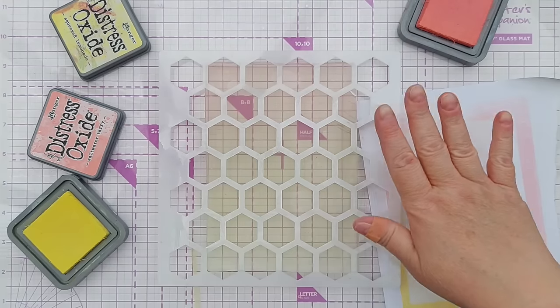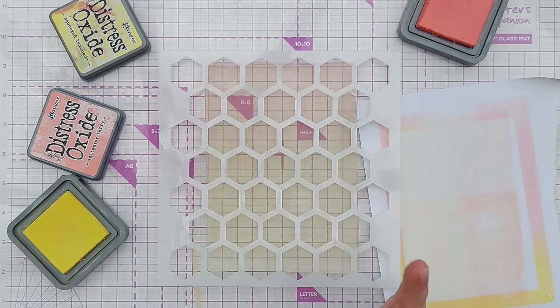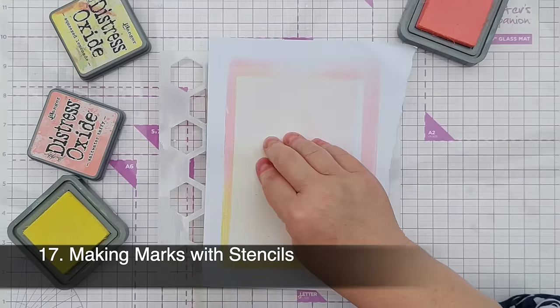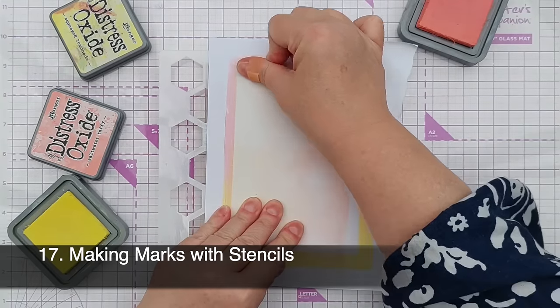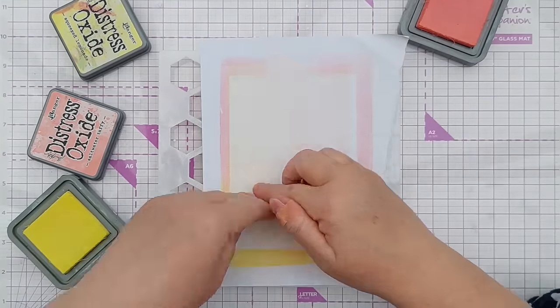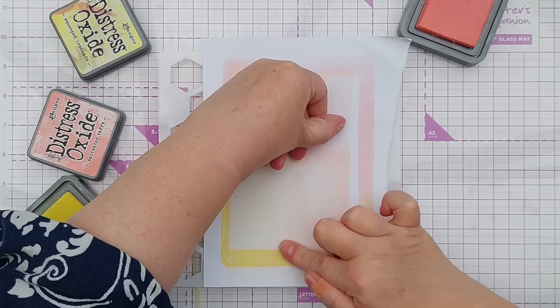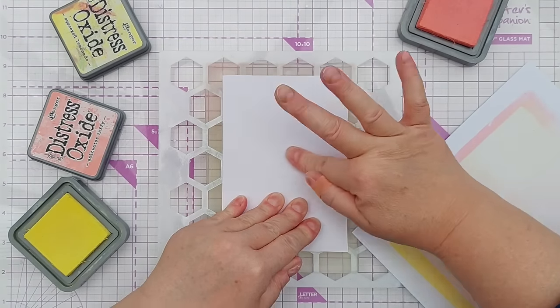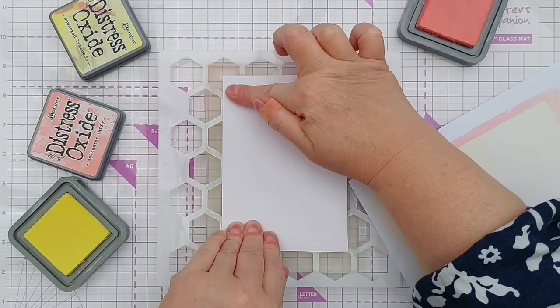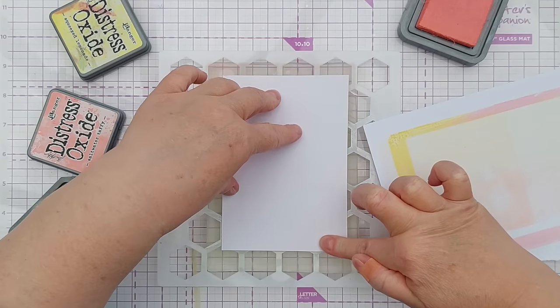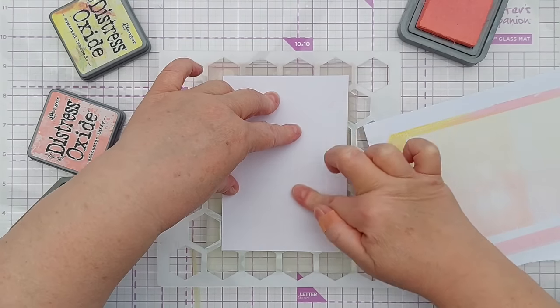So I've just added ink again to my plate, popped a stencil on top, and now I'm going to press that down. I'm pushing quite hard making sure to get paper to contact the ink. If you use a thinner paper it might be easier to get that contact, I'm just using a regular cardstock.